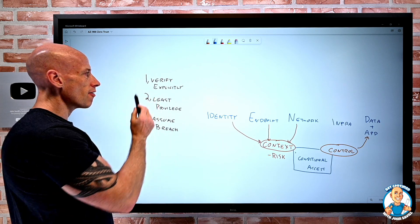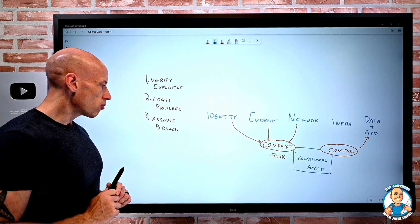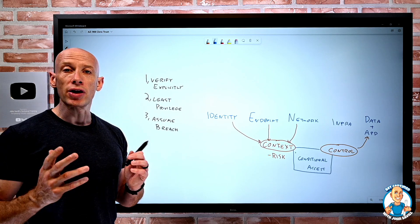So key tenants, verify explicitly, least privilege, and assume breach.